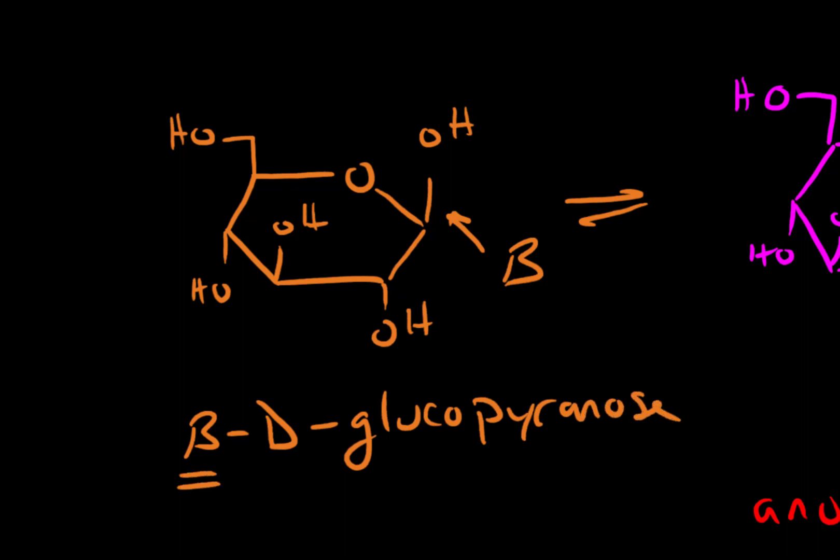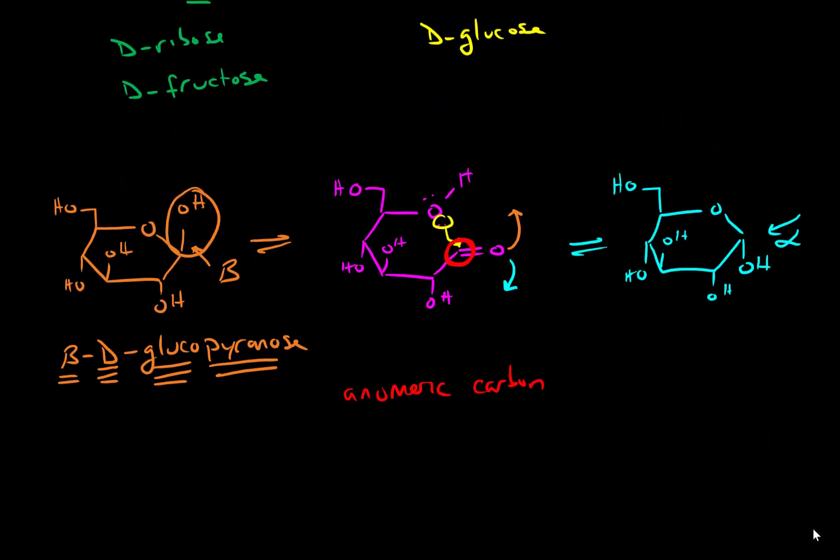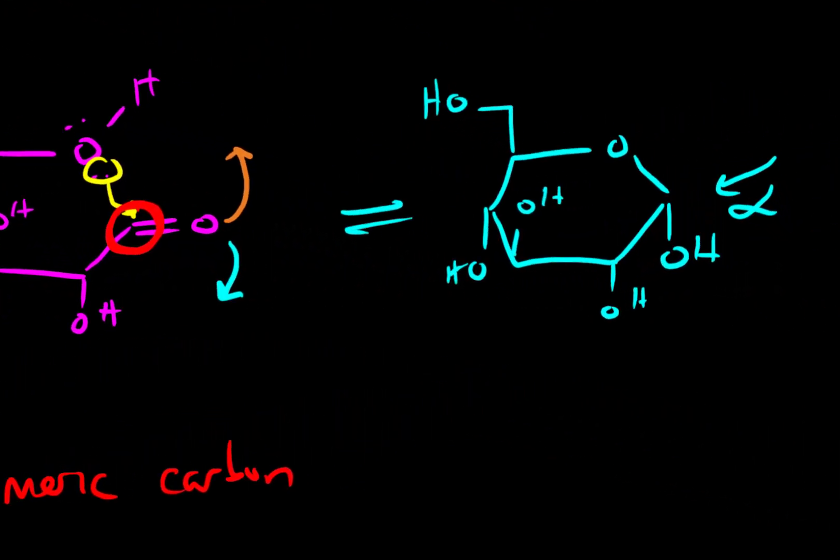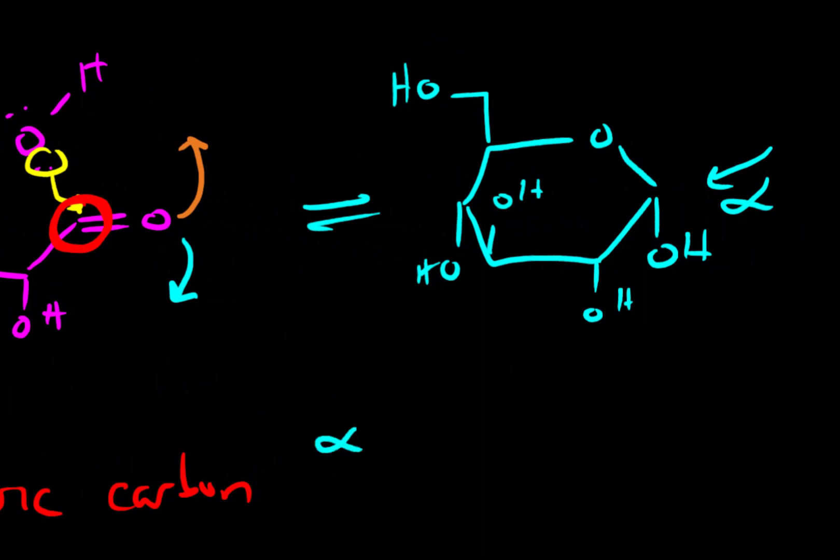Beta telling us that this alcohol group points up. D telling us about the orientation of that alcohol in the Fischer projection. Gluco telling us it's glucose and pyranose telling us it's in the cyclical pyranose form. Likewise, in the alpha orientation, the only thing that changes is it's now alpha D-glucopyranose.